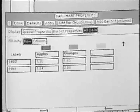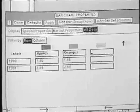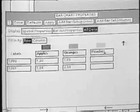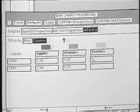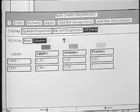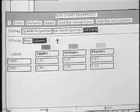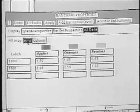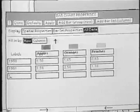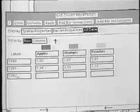And we can add another kind of fruit to the bar chart by adding a column to the table, typing in the name of the fruit, and entering the data.